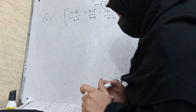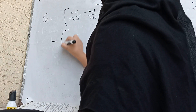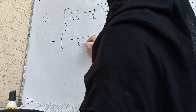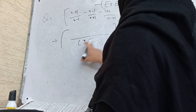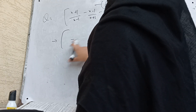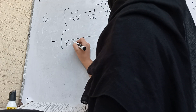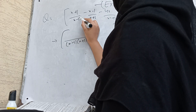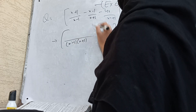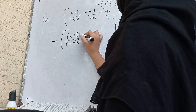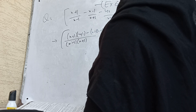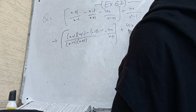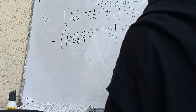So first we find the LCM of these three terms. The first two terms have denominators (x-1) and (x+1), giving us (x+1)(x+1) minus (x-1)(x-1). The third term is minus 4x/(x⁴+1) and 4x/(x⁴-1) as they are.